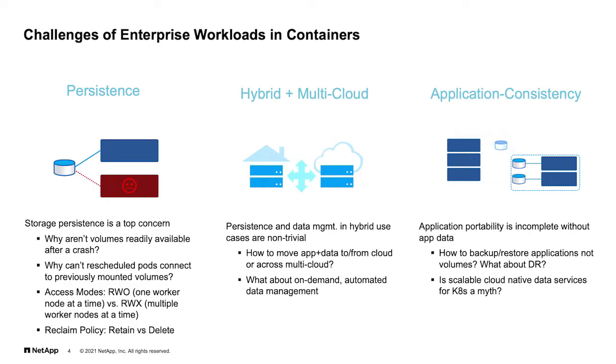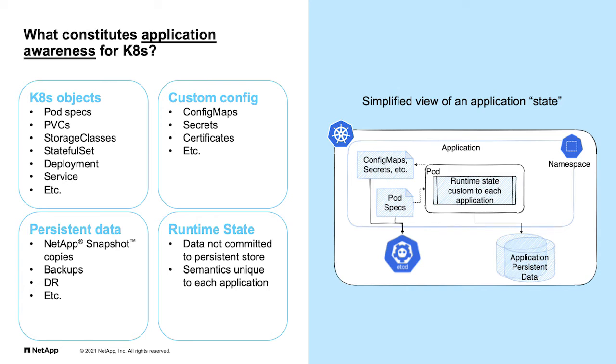We need to understand how an application is constructed in Kubernetes compared to a bare metal or virtualized environment. Kubernetes requires application awareness to do that job. In virtualized environments, all configuration was with the VM itself, but in Kubernetes, all application metadata — Kubernetes objects like config maps, secrets, stateful sets, and persistent volume claims — is constructed along with the application. When migrating, you need to migrate the configuration, its data, and the application state. Otherwise, you'd have to manually copy all those Kubernetes objects, which is not practical.